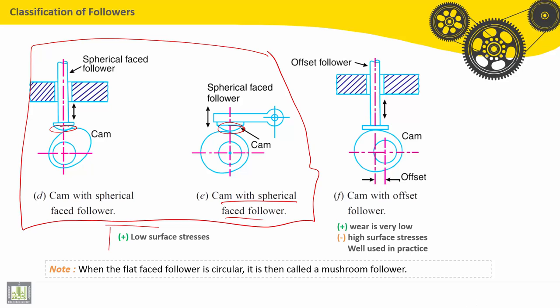So the advantage of this follower is low surface stresses. For this type, cam with offset follower, we have an offset between the axis of the follower and the axis of the cam, axis of rotation of the cam.